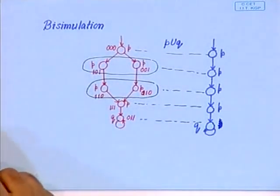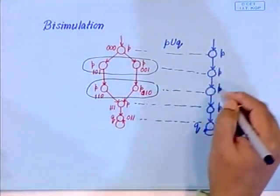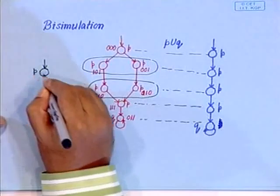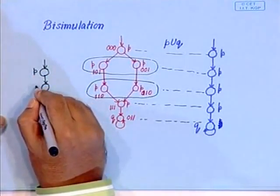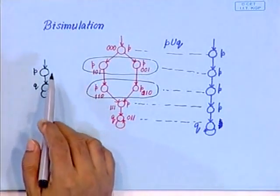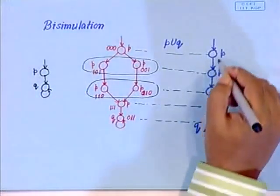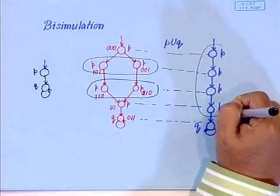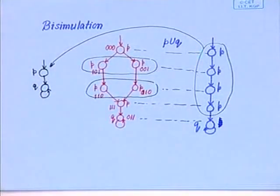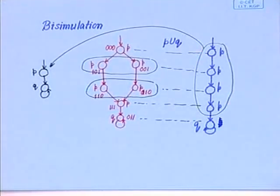Now let us look at this: instead of keeping p p p p p p q, if we just keep one p and one q — like this — then this also satisfies p until q. So what did we do? We took this whole set of states. Essentially, what are we doing? We are ignoring timing. We are ignoring the fact that it was in the p state for four cycles, and then it went to the q cycle. We just said, okay, it was satisfying p, and then it went to q.